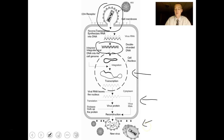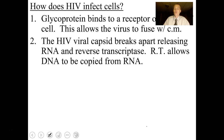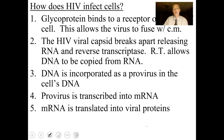To summarize HIV replication: the glycoprotein binds to a receptor on the T cell membrane, allowing the virus to fuse. The HIV capsid breaks apart, releasing RNA and reverse transcriptase. Reverse transcriptase copies RNA into DNA. The DNA is incorporated as a provirus into the cell's DNA. The provirus is transcribed into messenger RNA, which is translated into viral proteins, and new viruses are assembled and leave the cell.